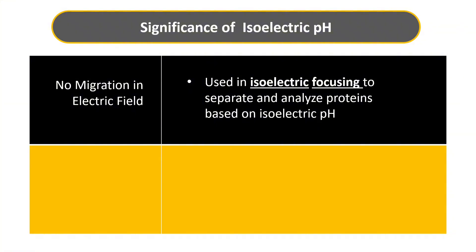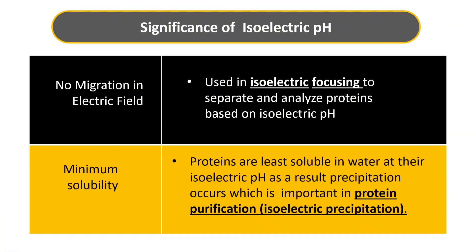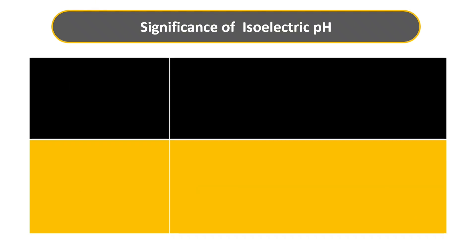The next characteristic is minimum solubility. At isoelectric pH, solubility is minimum because for something to be soluble in a polar medium it must be charged, but at isoelectric pH the net charge is zero. As a result, precipitation occurs. In terms of proteins, proteins are least soluble in water at their isoelectric pH, which is most important in protein purification, also called isoelectric precipitation.